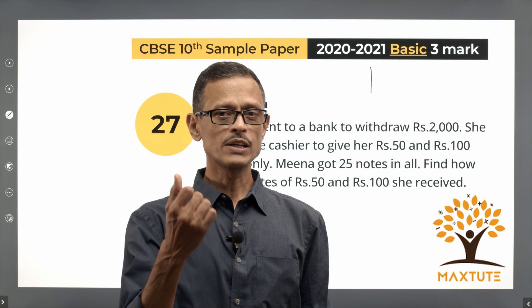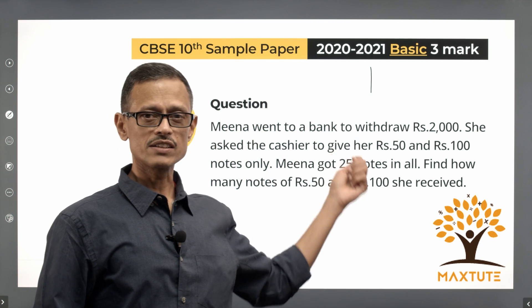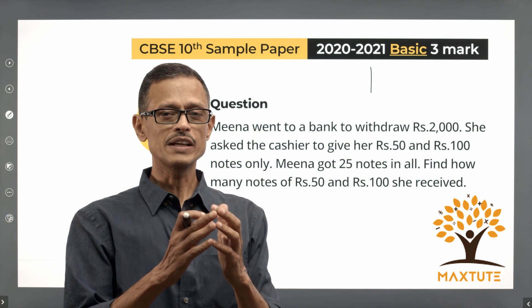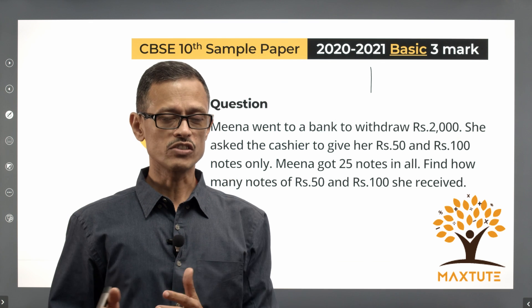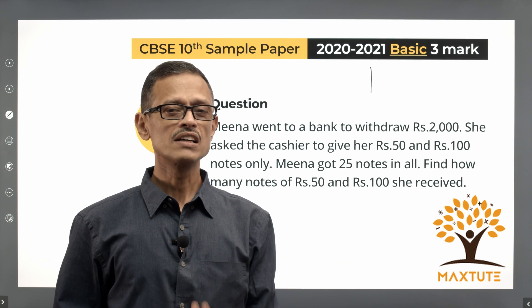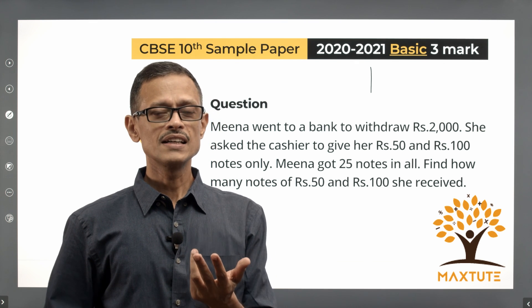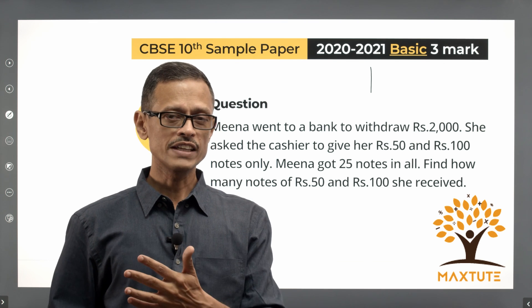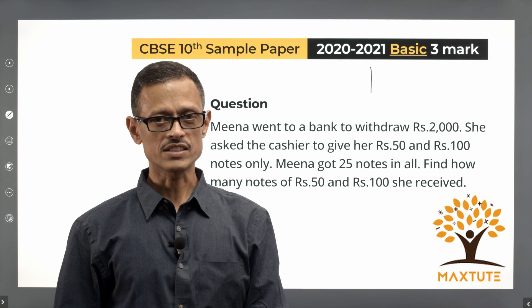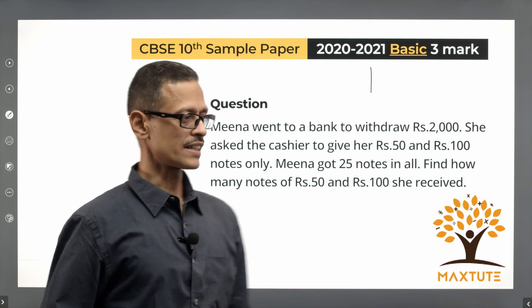What we're going to do is decode the information given in this passage and then frame linear equations. We'll actually be getting a pair of linear equations, solve that, and the answer to the variables we assign is going to be the answer to the question. Let's get started.